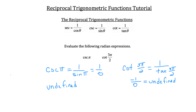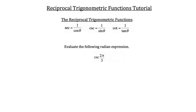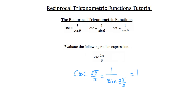Now let's look at a radian expression that does work out. Evaluate the cosecant of 2 pi over 3. This equals 1 over the sine of 2 pi over 3. Enter it into your calculator as 1 over sine of 2 pi over 3, with 2 pi over 3 in parentheses. The answer is approximately 1.15. Remember, your calculator must be in radian mode.